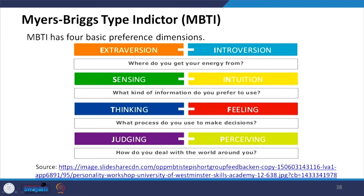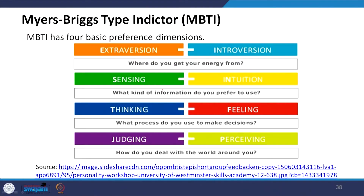With the help of these personality preference dimensions, one can decide what type of typology the person belongs to. A person may have either Extraversion or Introversion, Sensing or Intuition, Thinking or Feeling, Judging or Perceiving. With the different combinations of these four pairs, 16 types of personality typology evolve.